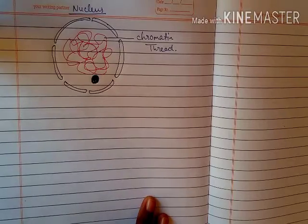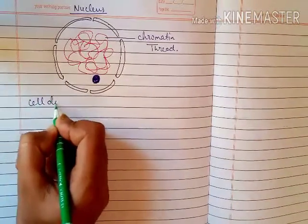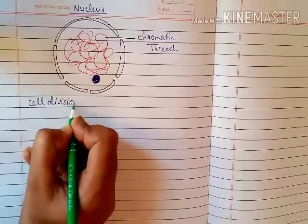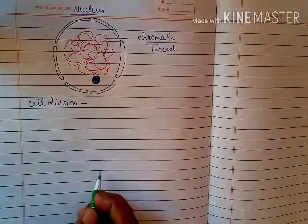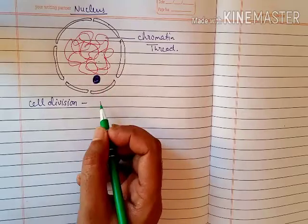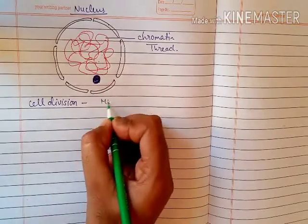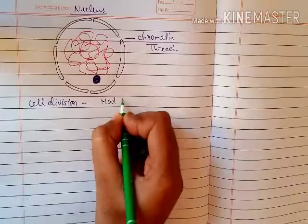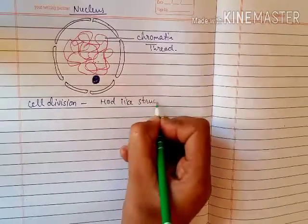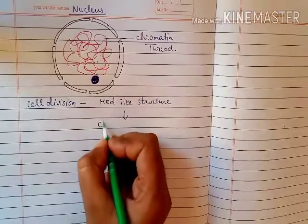At the time of cell division, this chromatin thread becomes condensed and makes a rod-like structure, which is called a chromosome.